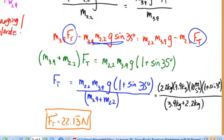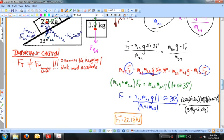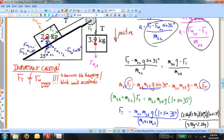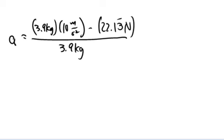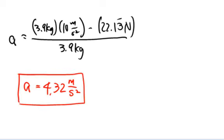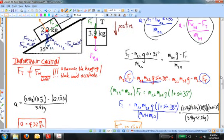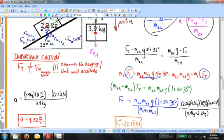That result makes sense: for the hanging block to accelerate downward, the tension must be less than 39 newtons, otherwise that block won't accelerate. Now, taking this 22.13 newtons and substituting it into one of the acceleration equations — using the 3.9 kilogram block equation since it has no trig functions — gives an acceleration of 4.32 meters per second squared. This means the 3.9 kilogram block accelerates downward at 4.32 m/s², and the 2.2 kilogram block accelerates up the incline at 4.32 m/s².